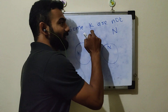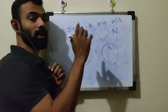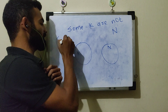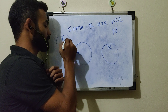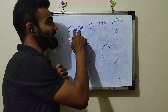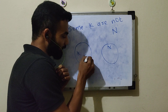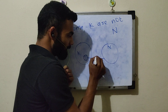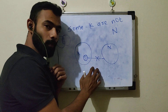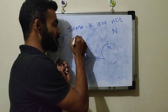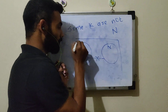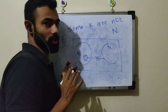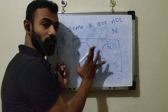So 'Some K are not N' — last time we studied 'Some K are N,' and this is the shaded part. Now, for the Venn diagram, we take a question and if this is our Venn diagram, we are going to see all the possible correct conclusions. That's what we are going to see today.